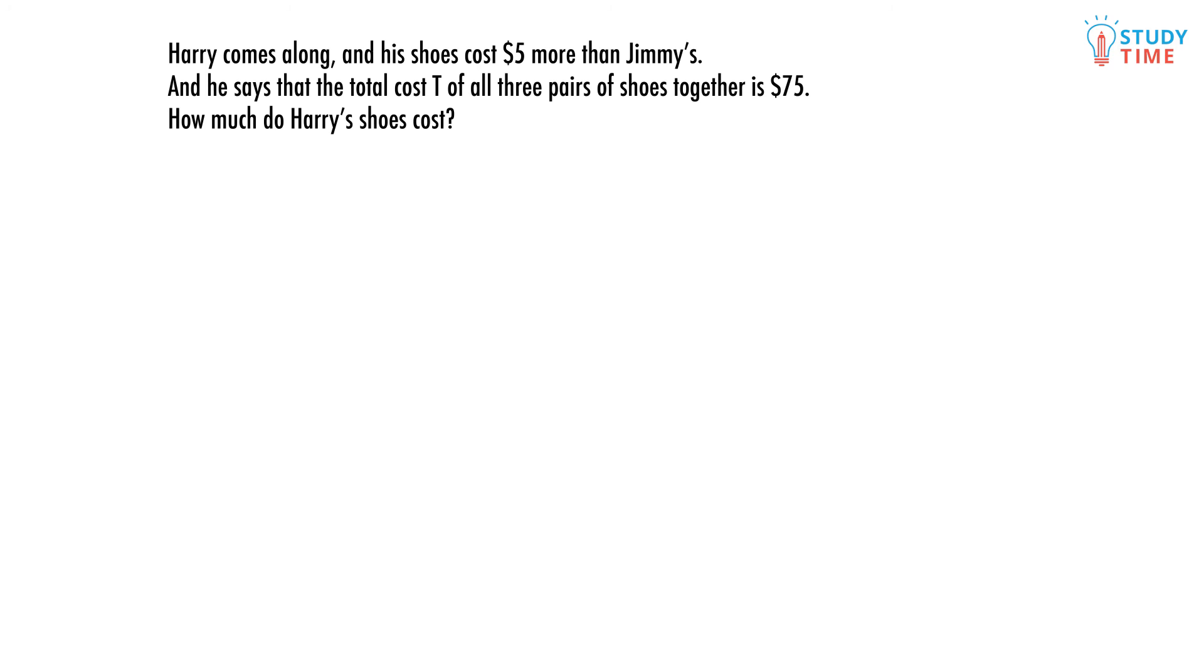Now let's say Harry comes along and his shoes cost $5 more than Jimmy's, and Harry says that the total cost T of all three pairs of shoes together is $75. How much do Harry's shoes cost? Well, let's write Harry's shoes in terms of the cost of Jimmy's shoes, so H equals J plus 5.